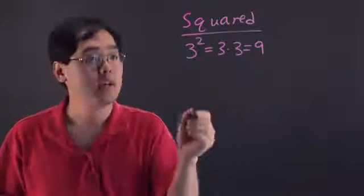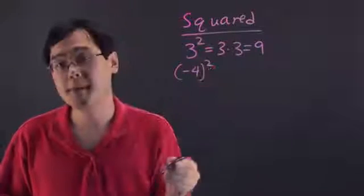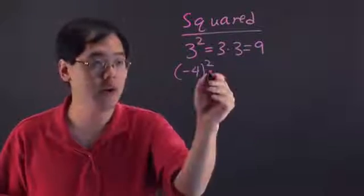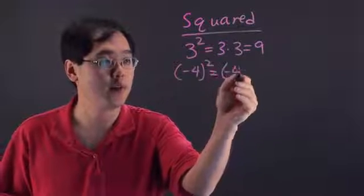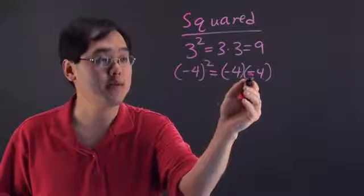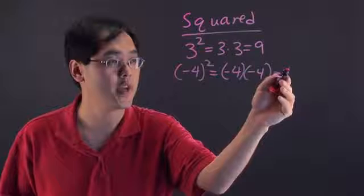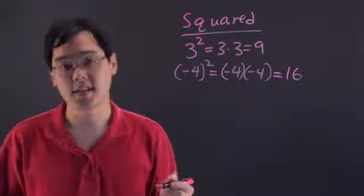Now you can do this with any number. For example, if you had negative 4 squared, that means you're raising negative 4 to the second power. That means you're multiplying negative 4 by itself twice. Now negative times a negative is going to be a positive, so you've got to keep that in mind. So 4 times 4 is 16, so negative 4 squared is 16.